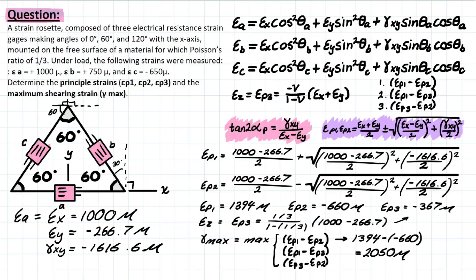And a very similar thing, we're just plugging in the numbers that we previously solved for here, and then outputting both of these from our calculator. So principal strain p1 and p2 are both solved for here. We have 1,394 and negative 660.